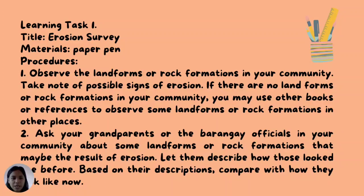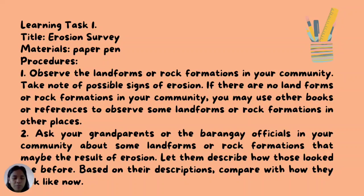Learning Task Number 1: Erosion Survey. Prepare the materials listed, and if not available, you may use other materials at home. You may ask the help of your parents, guardians, or any adult family members if needed. Materials: paper and pen. Procedure — Number 1: Observe the landforms or rock formations in your community and take note of possible signs of erosion. If there are no landforms or rock formations in your community, you may use books or references to observe landforms or rock formations in other places.